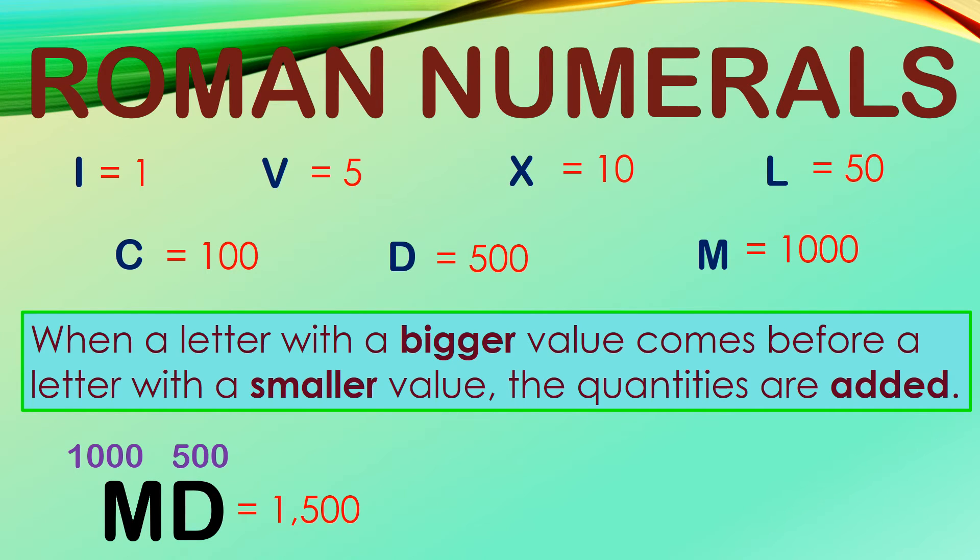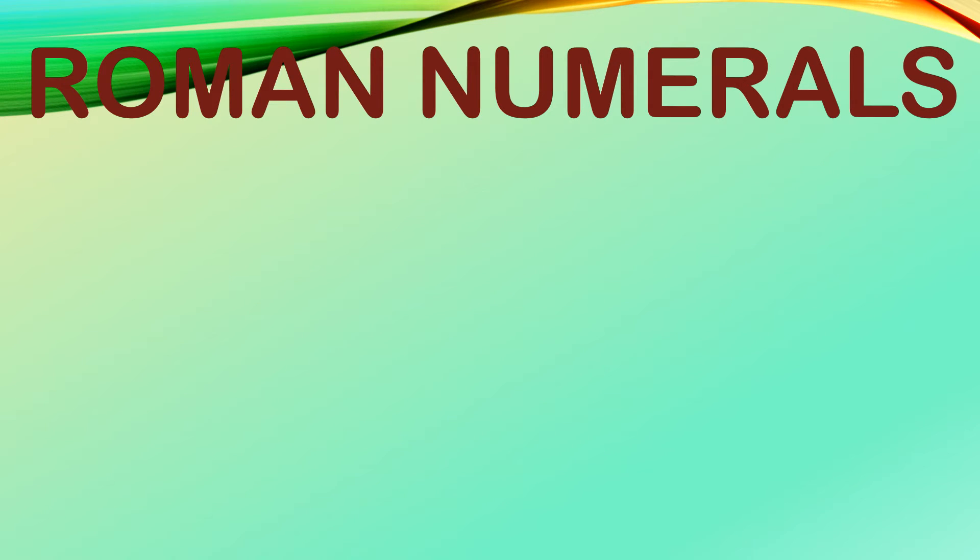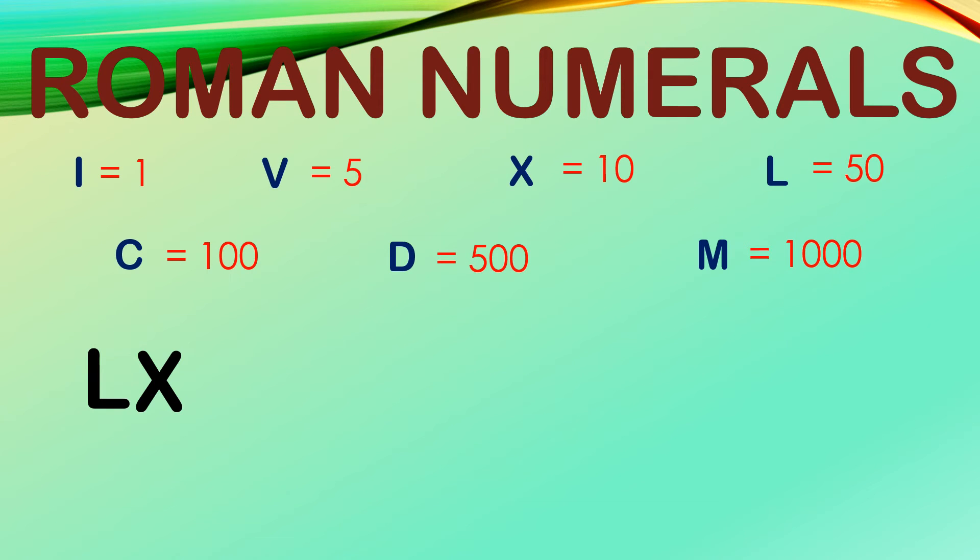It means that if you have two M's or M and M in a row, the value is 2,000. Let's apply what we've learned by using multiple letters. But before we do so, be reminded that when a letter with a bigger value comes before a letter with a smaller value, the quantities are added. First one, we have L, X, V, I. Can you guess the number? If L is 50, X is 10, V is 5, and I is 1, add them all together, we have 66.